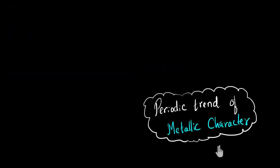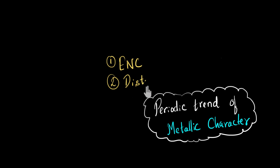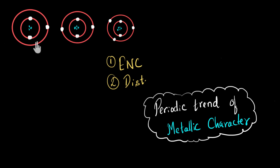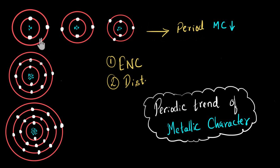In summary: metallic character can be measured by the ability of an element to give away its valence electron, which depends on effective nuclear charge and distance between nucleus and valence electron. As we go across a period, effective nuclear charge increases and distance reduces — both make it harder to give away the electron — so metallic character decreases. As we go down a group, effective nuclear charge increases slightly (harder to give away), but distance increases a lot (much easier to give away). Net-net, going down a group, it becomes easier to give away the electron, and therefore metallic character increases.